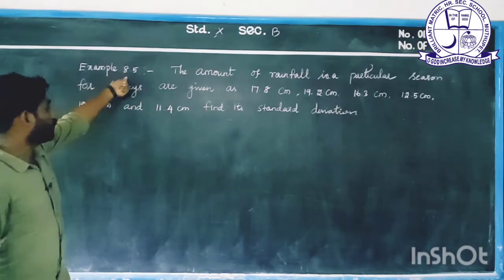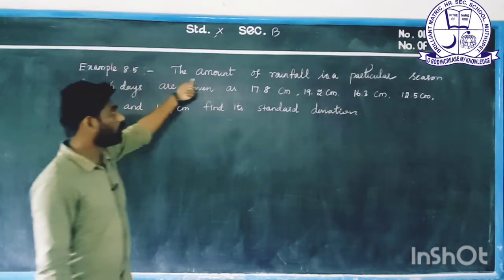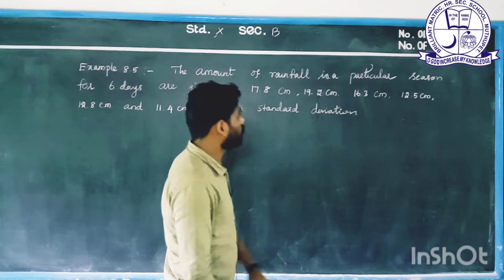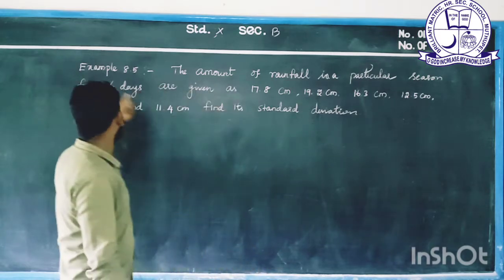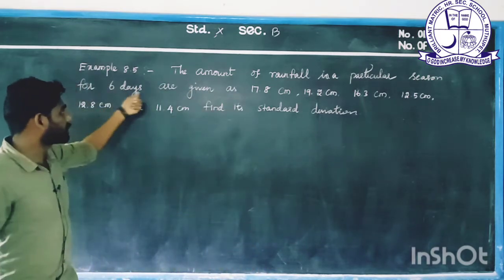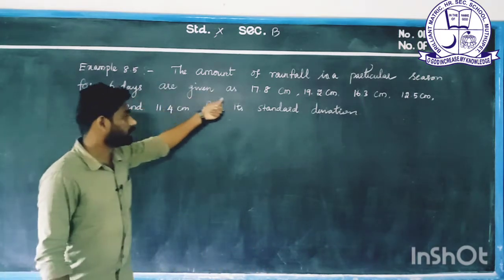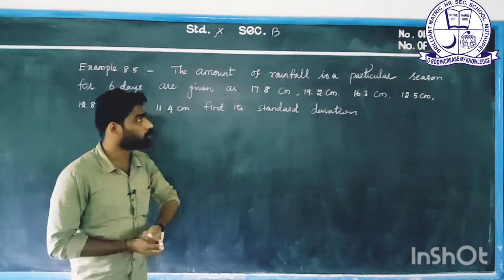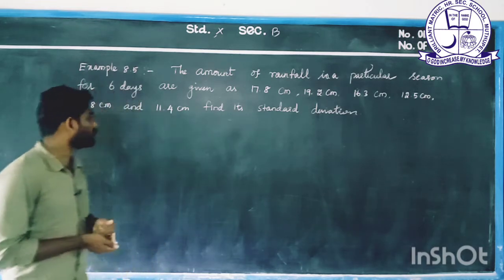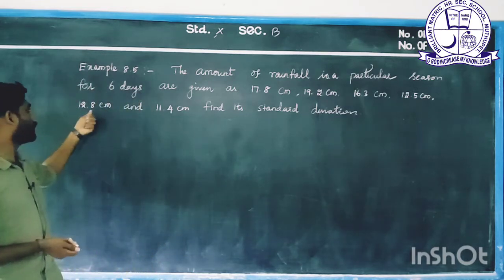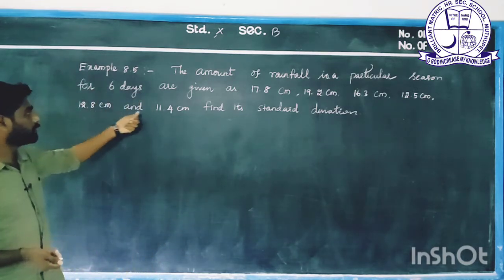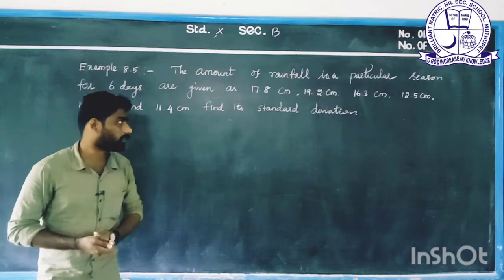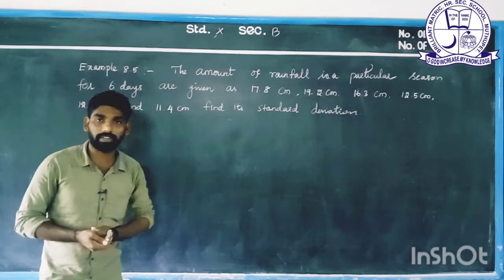Example 8.5. The amount of rainfall in a particular season for 6 days are given as 17.8, 19.2, 16.3, 12.5, 12.8 centimeter, and 11.4 centimeter. Find its standard deviation.